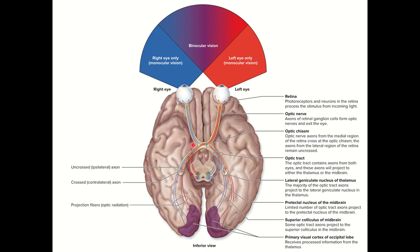The thalamus sends visual information to the primary visual cortex of the occipital lobe. Some axons go to the pre-tectal nucleus and the superior colliculus of the midbrain, which serve as the visual reflex center.